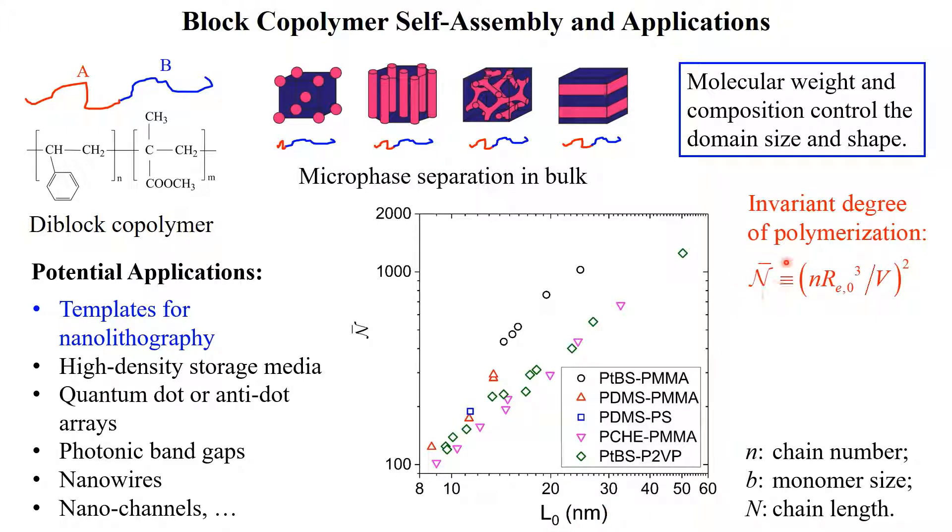Here, n-bar is defined as the number of copolymer chains n per volume of Re0³, with Re0 being the root-mean-square end-to-end distance of an ideal chain and estimated at the square root of n times the monomer size b. As the volume b³ of polymer melt is essentially those of monomers, we find that n-bar has the same order of magnitude as the chain length n. A smaller n-bar means larger fluctuations.